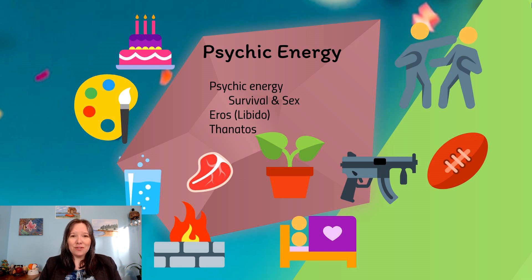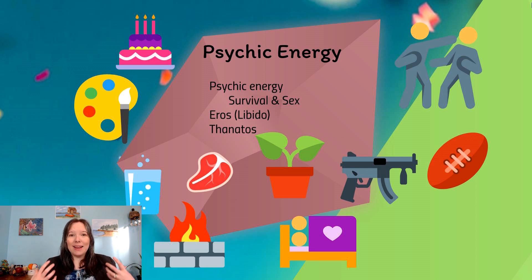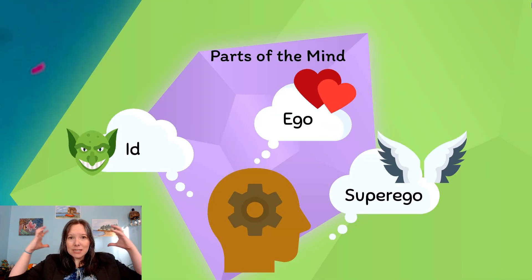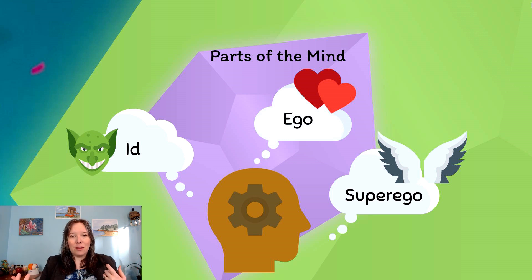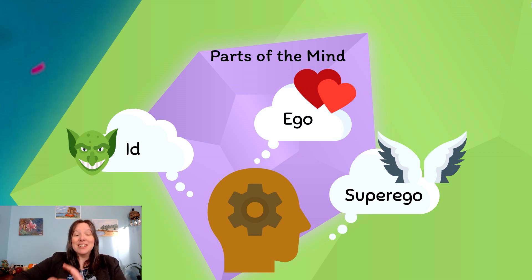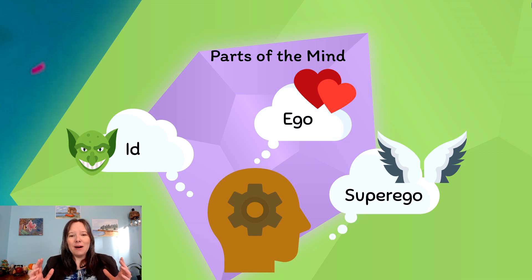In terms of Eros and Thanatos, Freud also believed we had three parts of the mind that would argue about when and how to use these drives: the id, the ego, and the superego. These are very different from his three tiers of consciousness — conscious, pre-conscious, and unconscious. For the parts of the mind, we're talking about different desires.